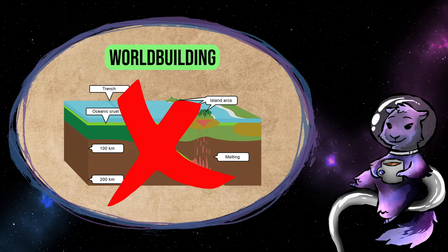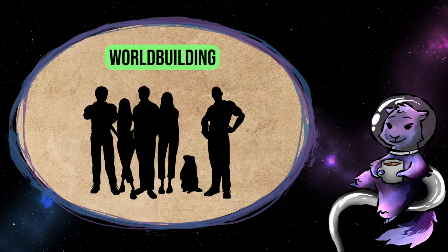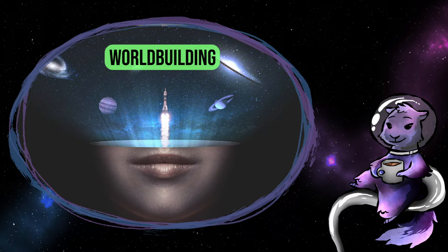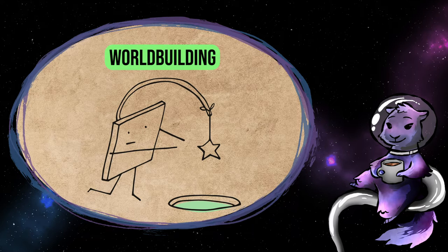Which, while embarrassing for whoever did that, is a good lesson to learn. Again, because this is where your most galaxy-brained thinking happens, worldbuilding systems in particular need strong guardrails to keep you from falling down rabbit holes.